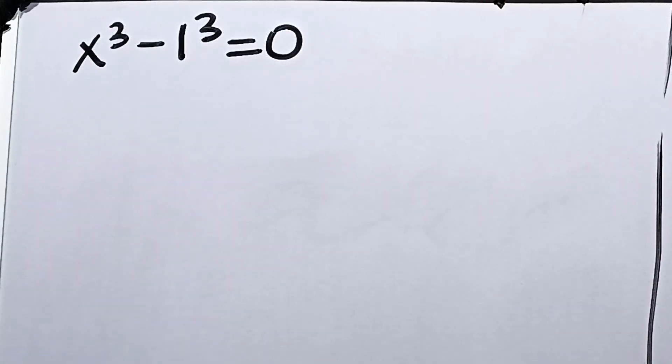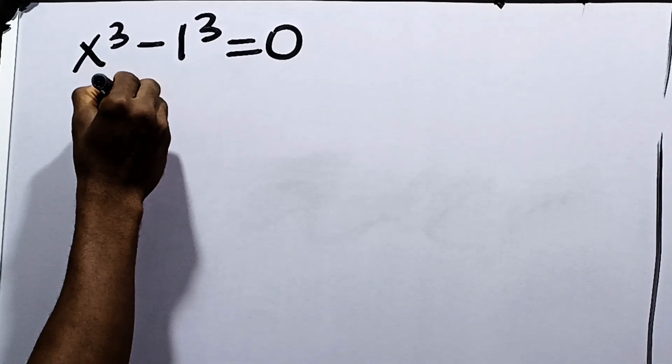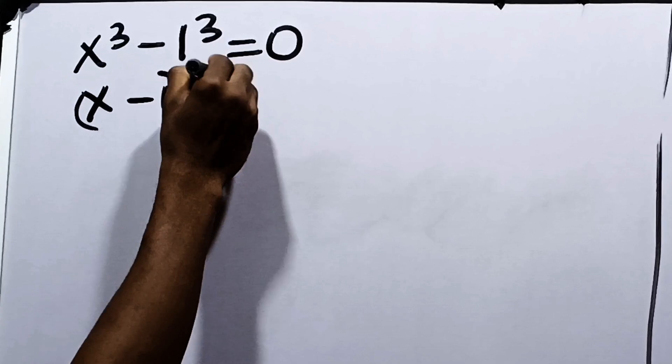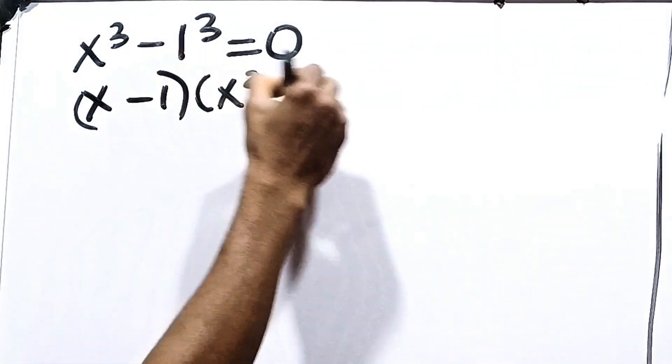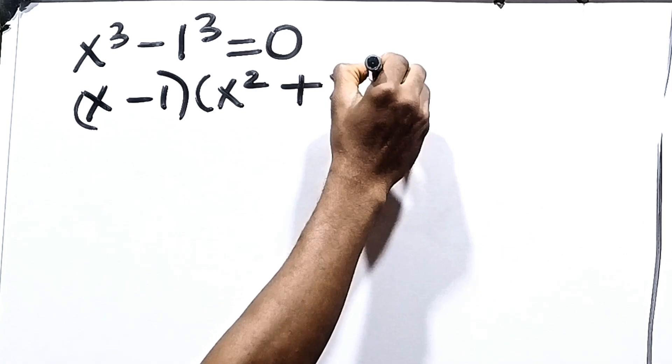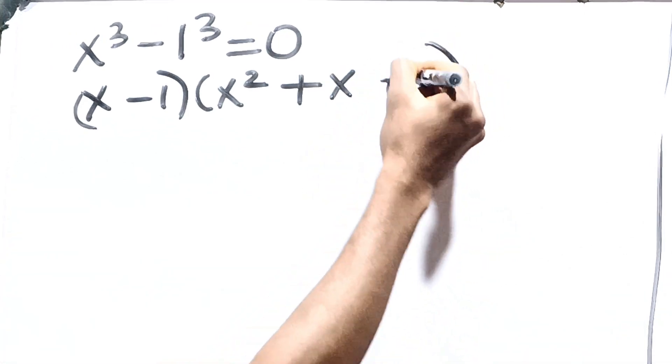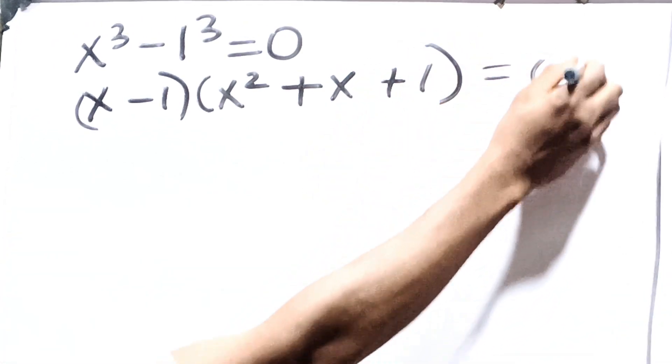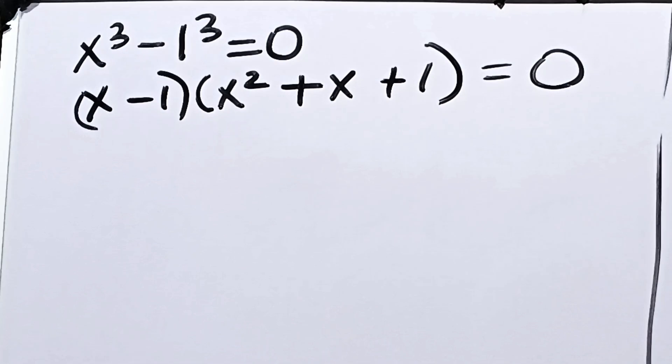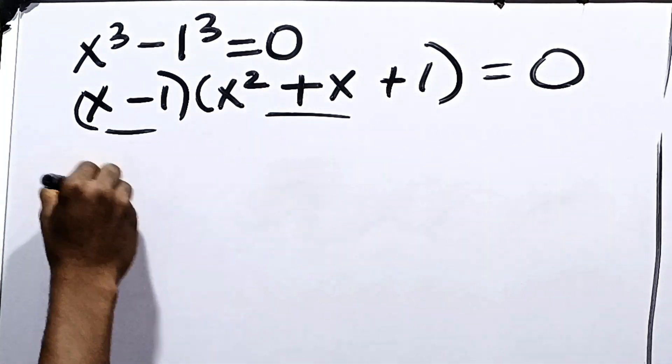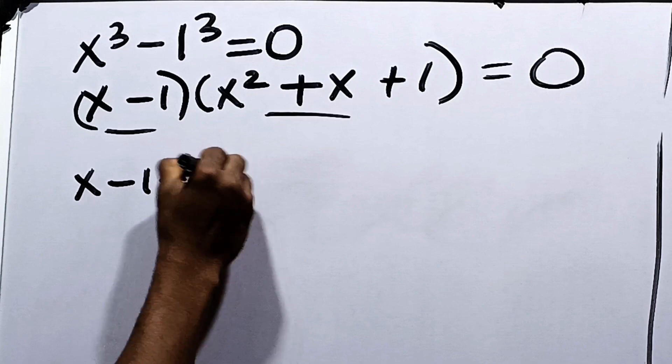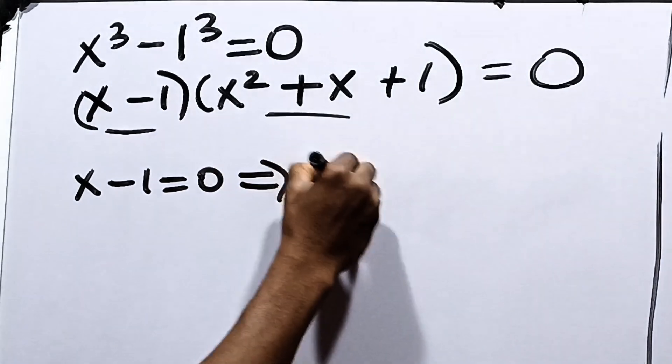Now, moving on from here, we can now apply the difference of 2 cubes. So we can say that we have x minus 1 into x squared plus x plus 1, as 1 squared is 1, is equal to 0. Again, you have the situation where the product of 2 factors equals 0. So we can say that either x minus 1 is equal to 0, implying that x is equal to 1.